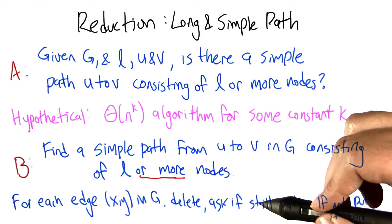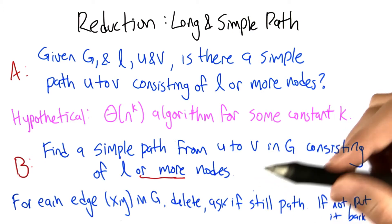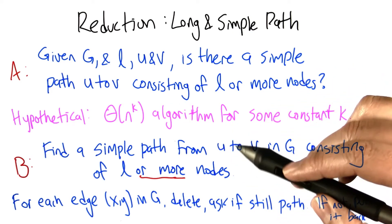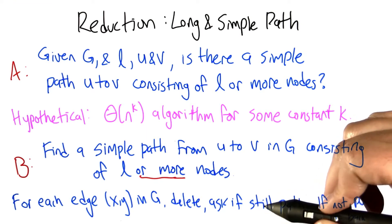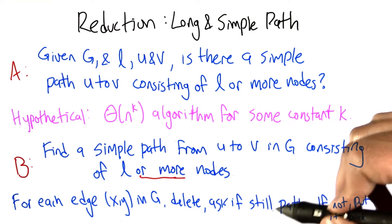But if the answer is no, that we've now actually broken the path, or the last path from U to V of length at least L in G, then we need to leave it in there. We keep repeating this until all the edges have been considered, and all that's left at the end will be the simple path.